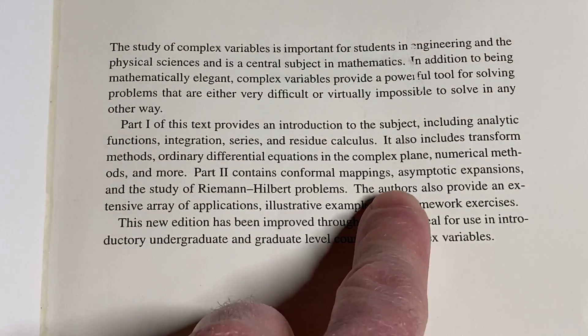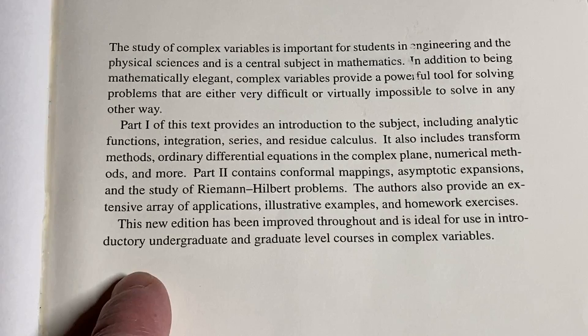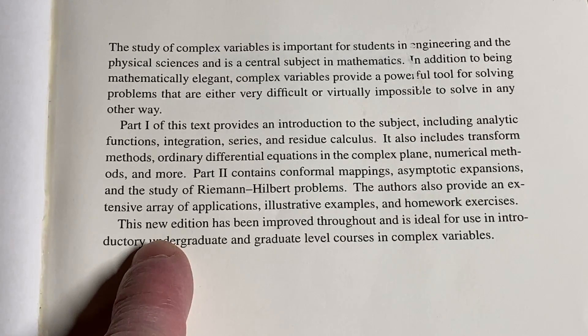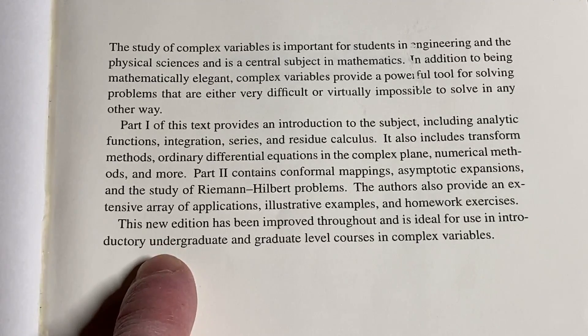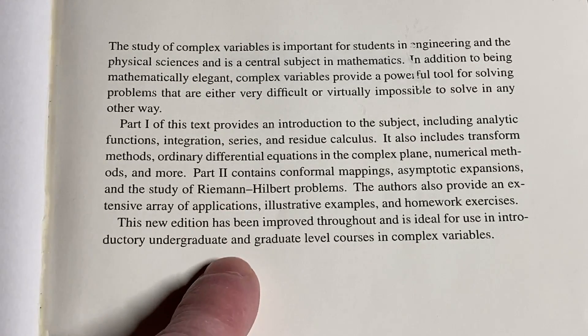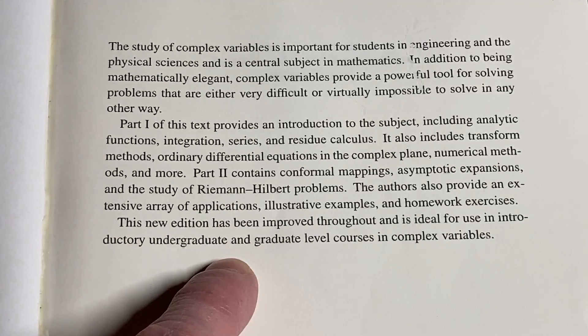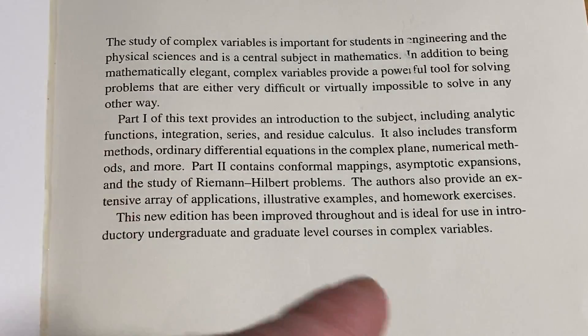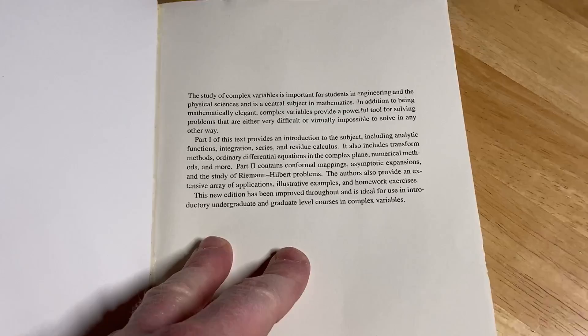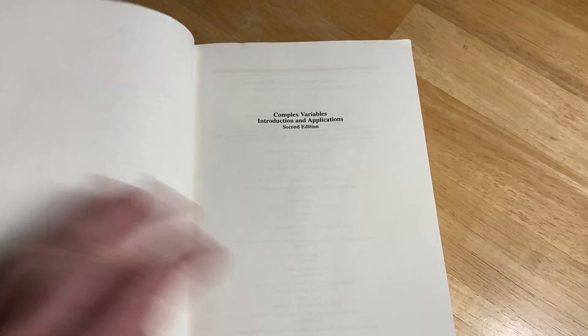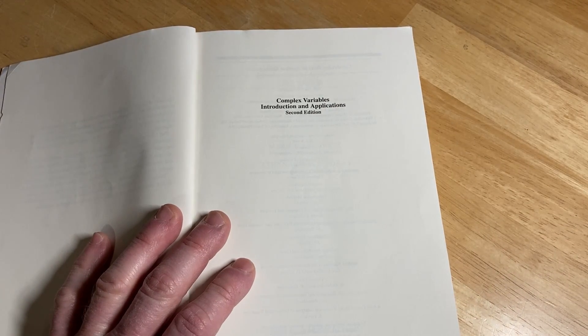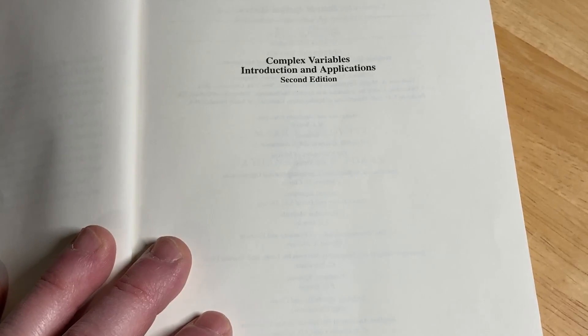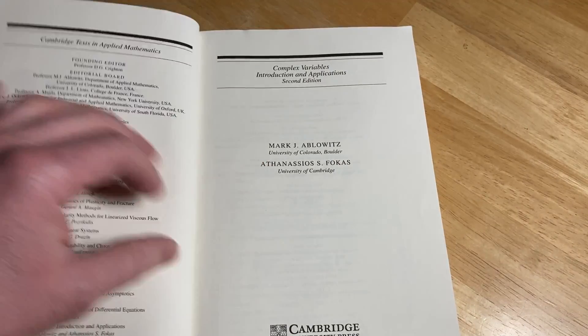Part two has more advanced stuff: conformal mappings, asymptotic expansions, and the study of Riemann-Hilbert problems. The authors provide an extensive array of applications, illustrative examples, and homework exercises. This new edition has been improved throughout and is ideal for introductory undergraduate and graduate level courses in complex variables. I should mention that I used this for a graduate level course. The professor had really good notes and would assign us some homework problems and some reading from the book.